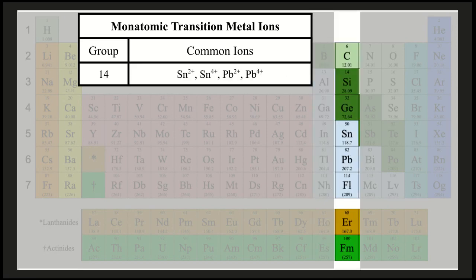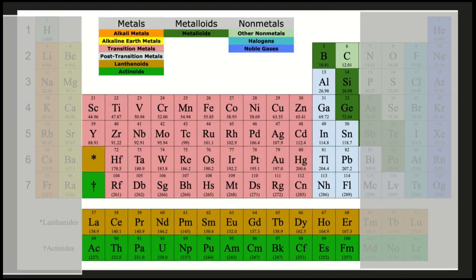That brings us to tin and lead. Both of these commonly come with a 2-plus or a 4-plus charge. That's just a quick summary of some of the charges that those transition metals or post-transition metals have.